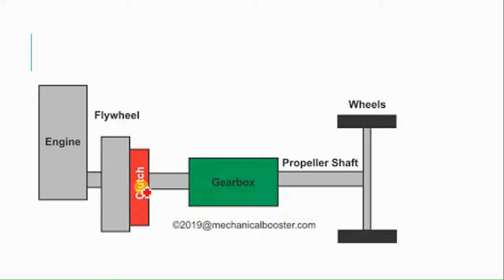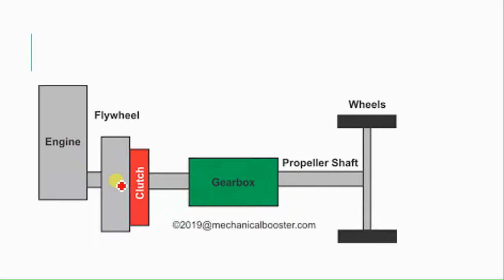This one is the engine and this one is the flywheel. After that, the clutch is to be installed and mounted. Thereafter the gearbox is there, then the propeller shaft, and then the rear wheels. So this is the overall arrangement involving the clutch.